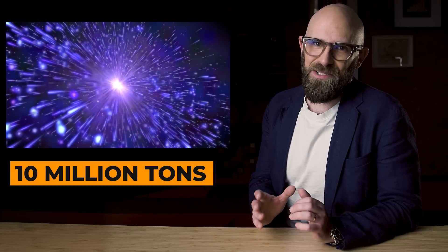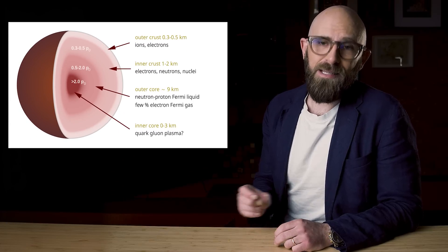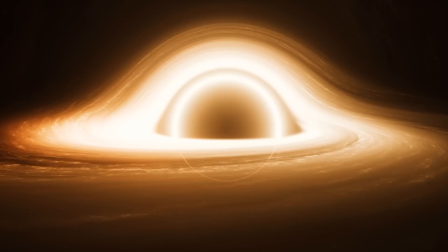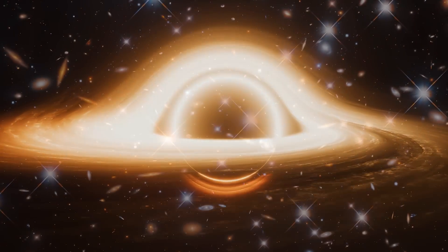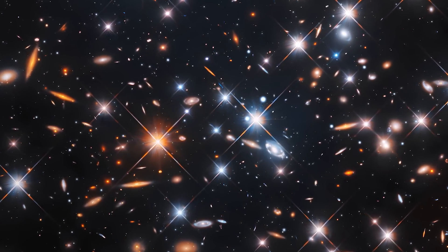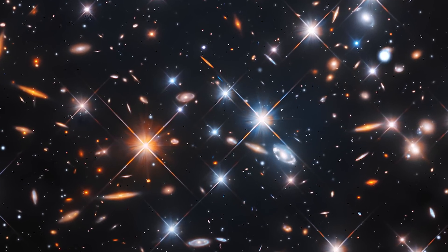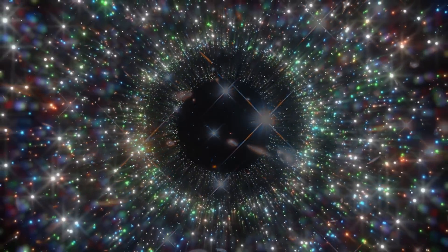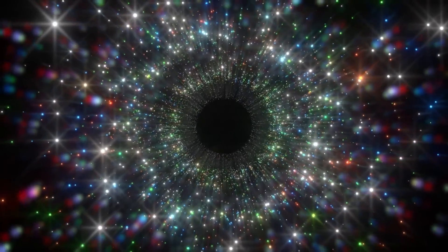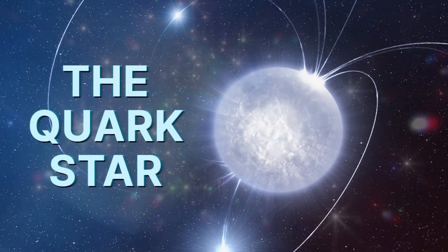A single teaspoon of matter from a neutron star would weigh 10 million tons. When such a star surpasses a certain critical mass, gravitational pressure crushes its neutrons and the entire celestial object collapses into a black hole — even smaller, much denser, exerting even more gravity. But what if there was an intermediate stage, in which gravitational forces break down neutrons, releasing the triplets of quarks which constitute them? The super-neutrons would become a broth of quarks — and that's a quark star.